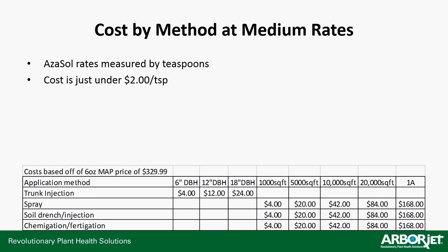Looking at cost of application at the medium rate — four teaspoons per gallon in a mixture. It breaks down at the six-ounce product at $330, which is just under $2 per teaspoon. For trunk injection, you're looking at about $4 to inject a six-inch tree. But you have to come back at least twice, probably three times in a two-to-three week span. So that six-inch tree turns into $12 pretty quickly, a 12-inch goes up to $36, and a 24-inch jumps up to $72. Unless it's your only option for that tree injection, it's not really the best way to use it.